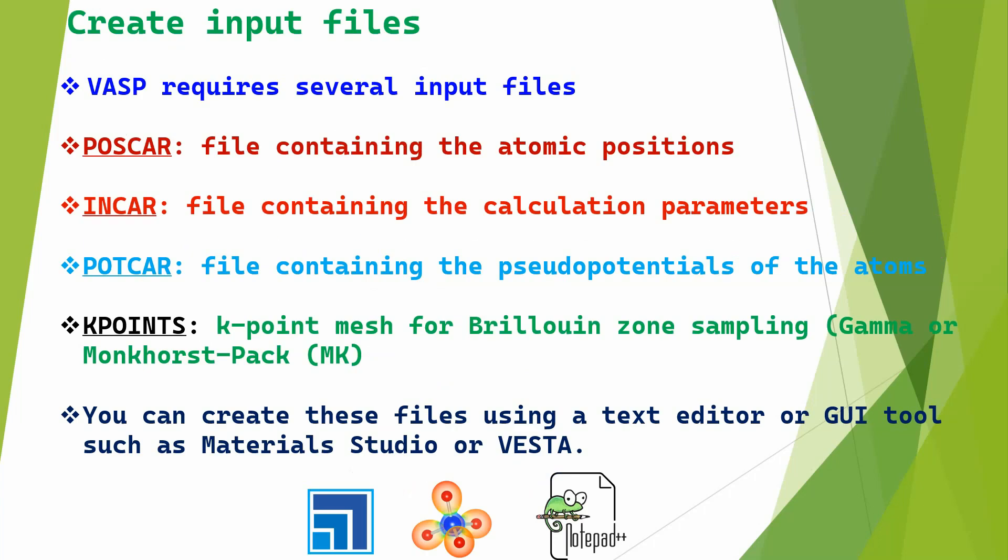First, you will see how to create the input file. VASP requires several input files: mainly the POSCAR file containing the atomic positions, the INCAR file containing the calculation parameters, the POTCAR file containing the pseudopotentials of atoms, and fourth, the KPOINTS file. You can create these files using a text editor or a GUI tool such as Materials Studio or VESTA.